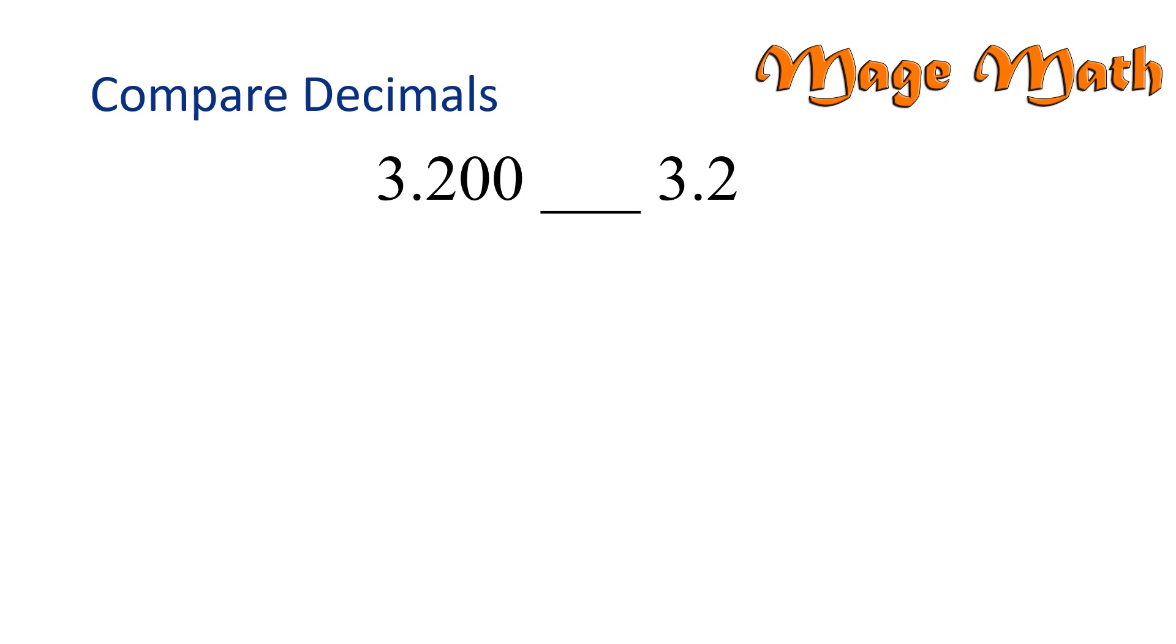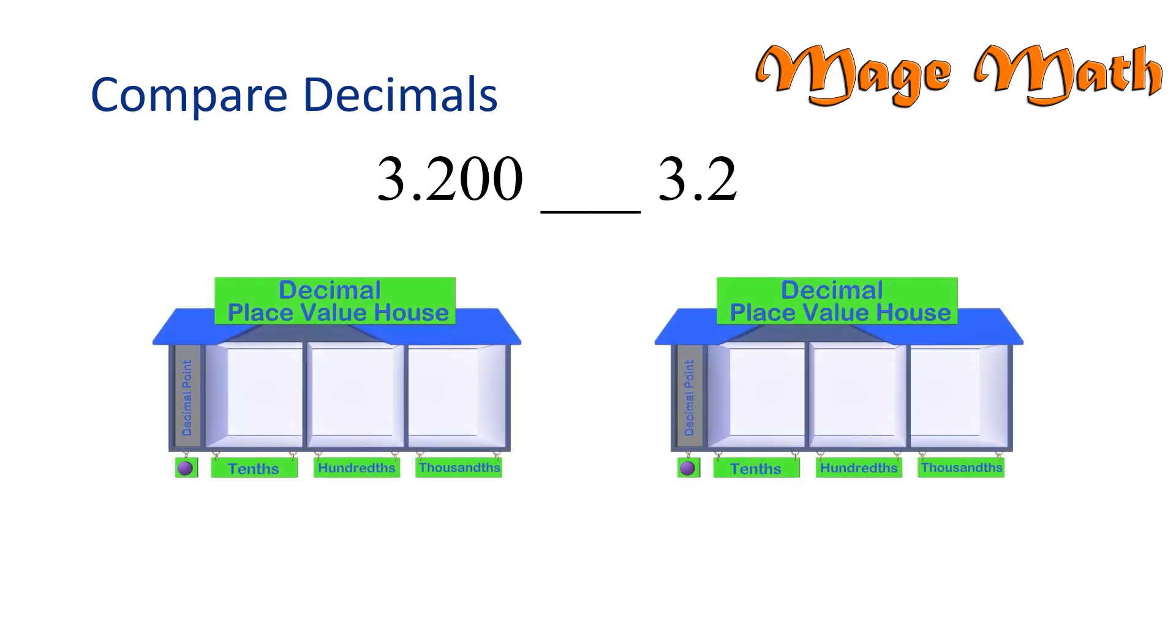Let's put our numbers into place value houses once again. To compare decimal numbers, we need them to have the same number of place values. Let's add zeros to our second number, so both numbers have the same place value of thousandths. This is interesting. What do you notice about these decimal numbers?